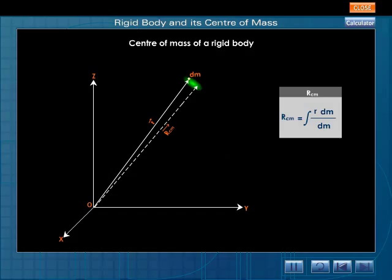Since integral D M gives the total mass of the body M, the equation can be represented as RCM is equal to 1 by M integral R D M.